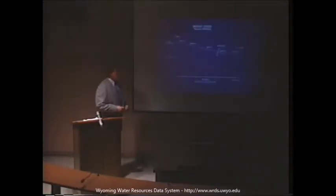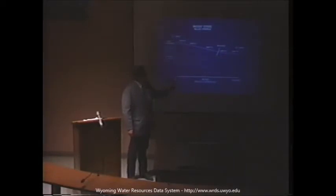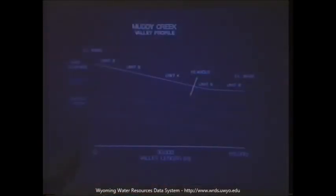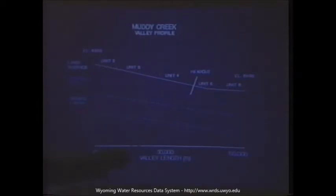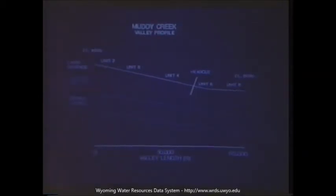Here you can see the resultant valley profile. An active head cut alters the valley profile, and as you can see, we have a fairly steep gradient from units 1 through 4. The head cut then comes in and the gradient is substantially less downstream from that point. This, in turn, affects sediment deposition and associated salt retention.